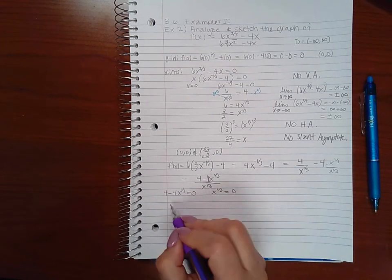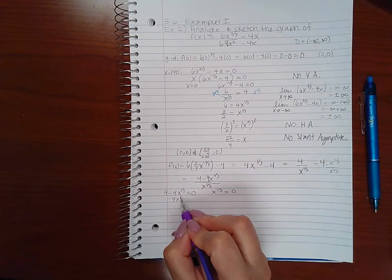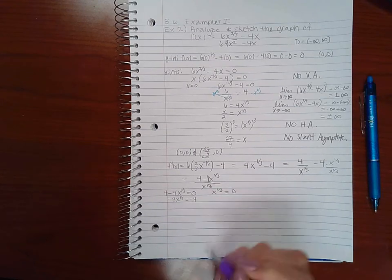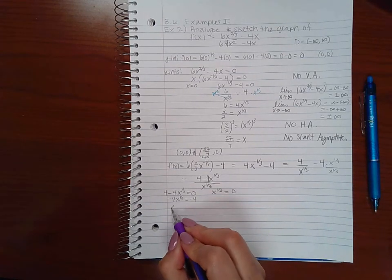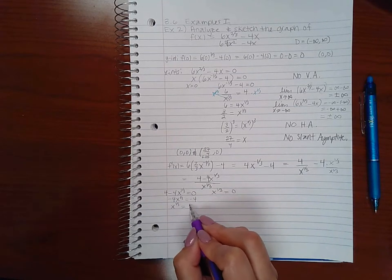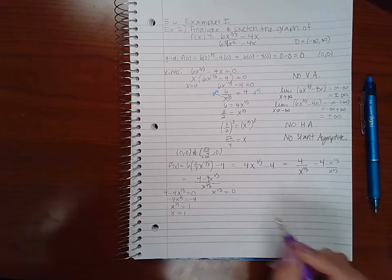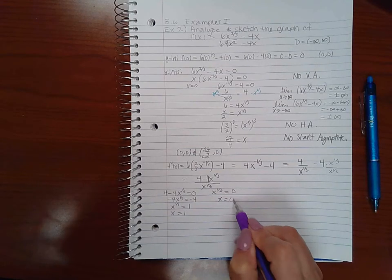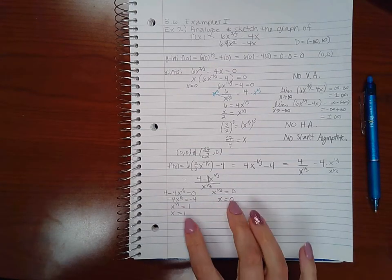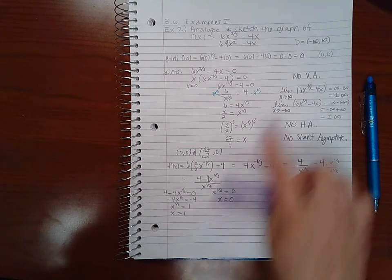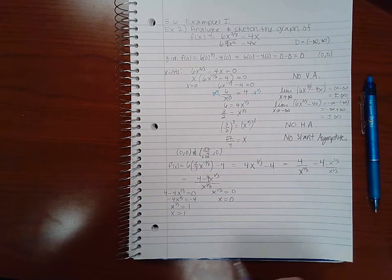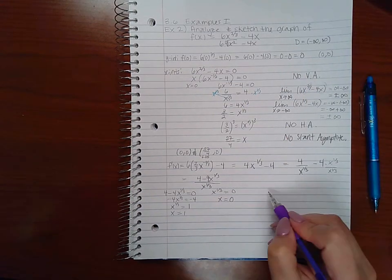and I've got to set my denominator equal to 0. So here I'm going to move over the 4, subtract 4 on both sides. I'm going to divide by negative 4 on both sides. Then I'm going to cube both sides. Here I'm going to cube both sides and end up with 0. So I have two critical numbers so far, both of which are in my domain.